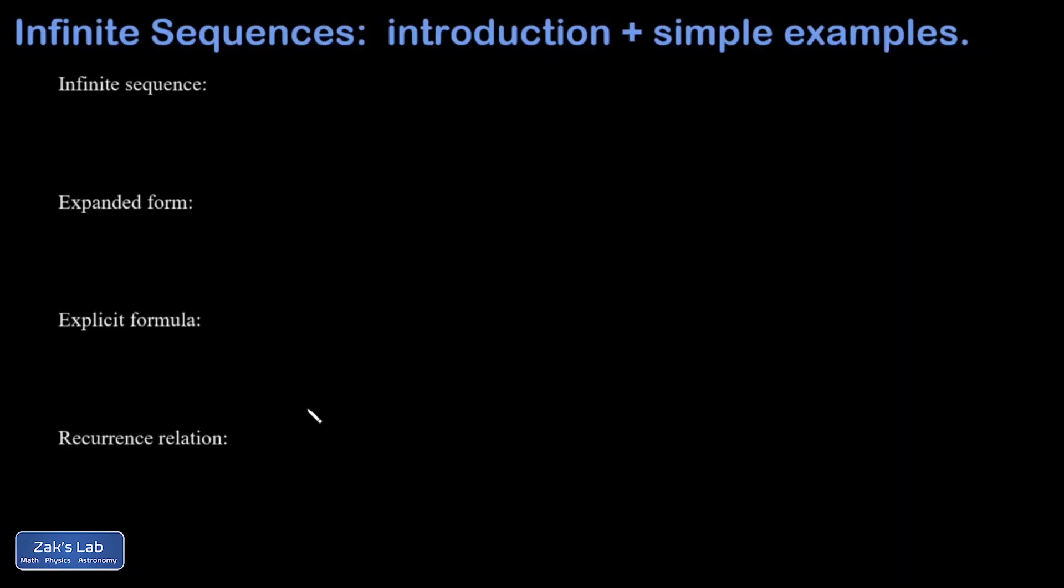The purpose of this video is to get some basic vocabulary for infinite sequences and then look at a simple running example to illustrate each of these things. So first, what's an infinite sequence? A typical notation for it is like this: I have braces and then an a with a subscript of n, and I could add to this that I want you to plug in n equals one, two, three, and so on.